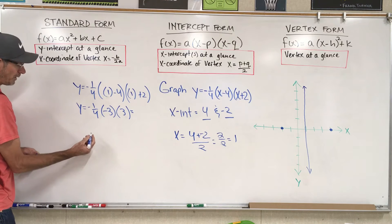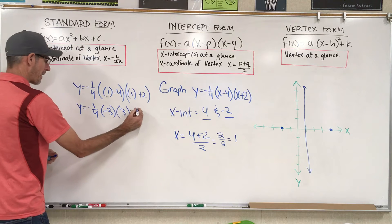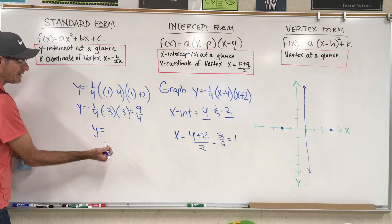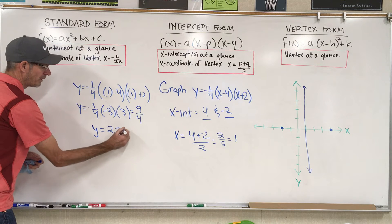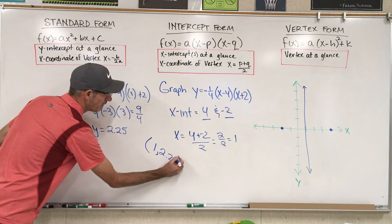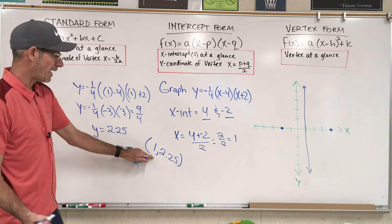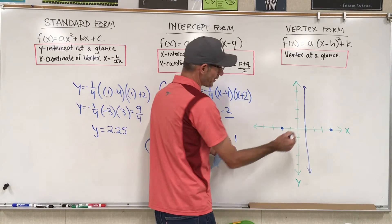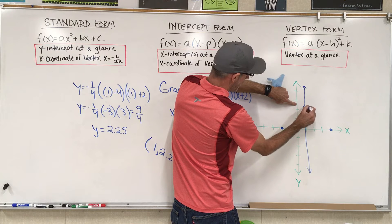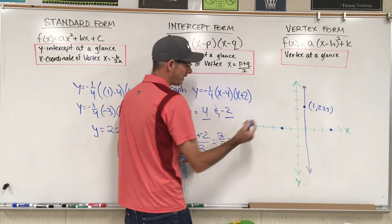That's going to give me y equals negative one-fourth times negative 3 times positive 3, which comes out to negative one-fourth times negative 9. So that's going to be positive 9 over 4, and using a calculator that's y equals 2.25. My vertex is at (1, 2.25). So I'm going to go over 1, which is where my axis of symmetry is, and up 2 and a quarter. So 2 and a quarter is about right there, and now my parabola is going to look like this.